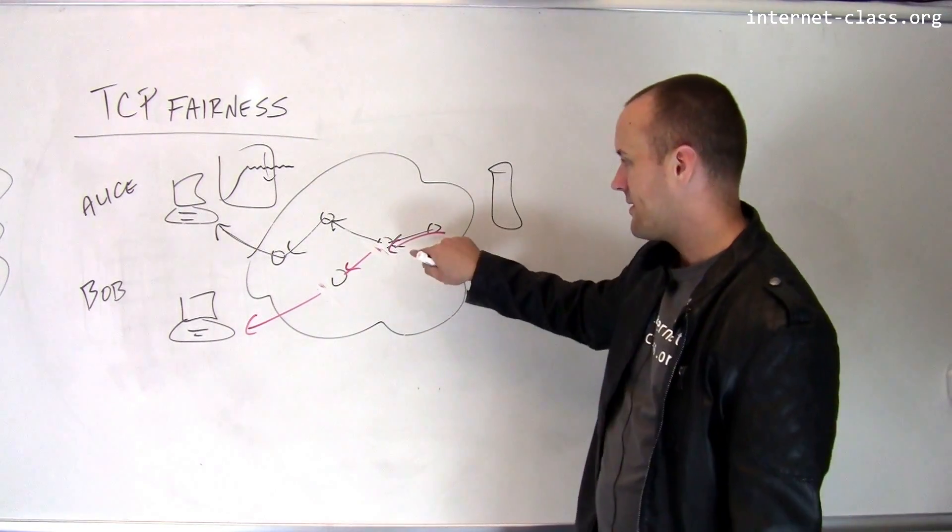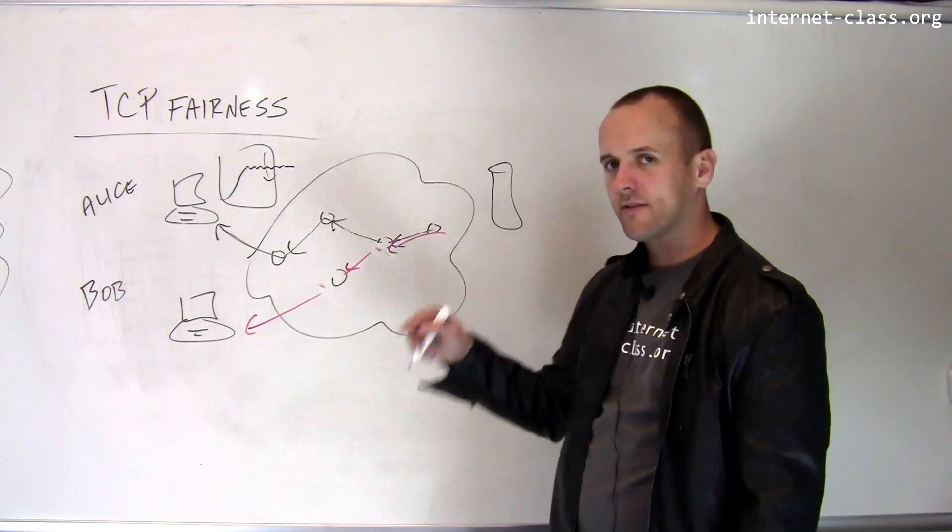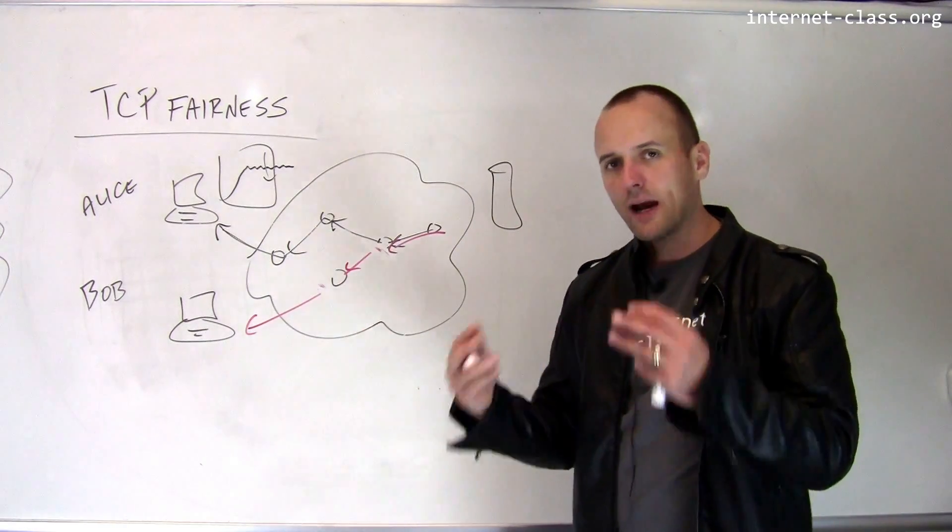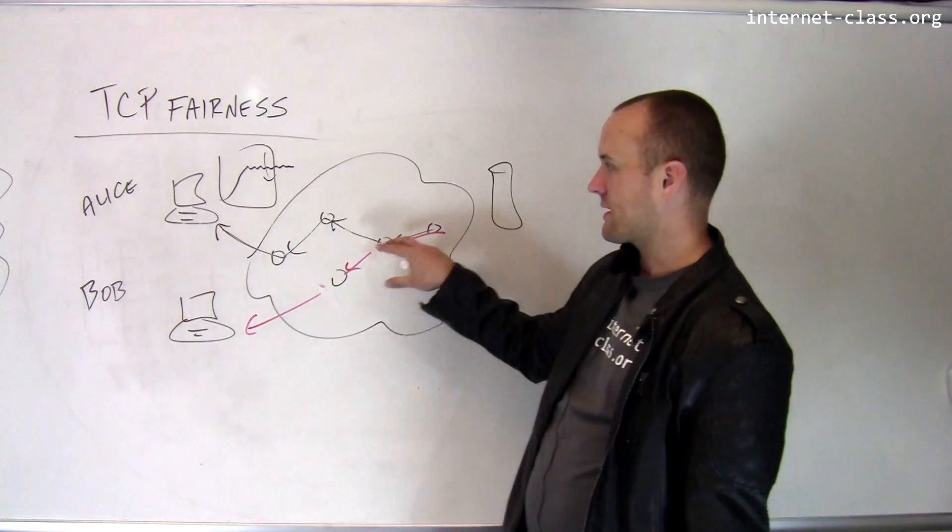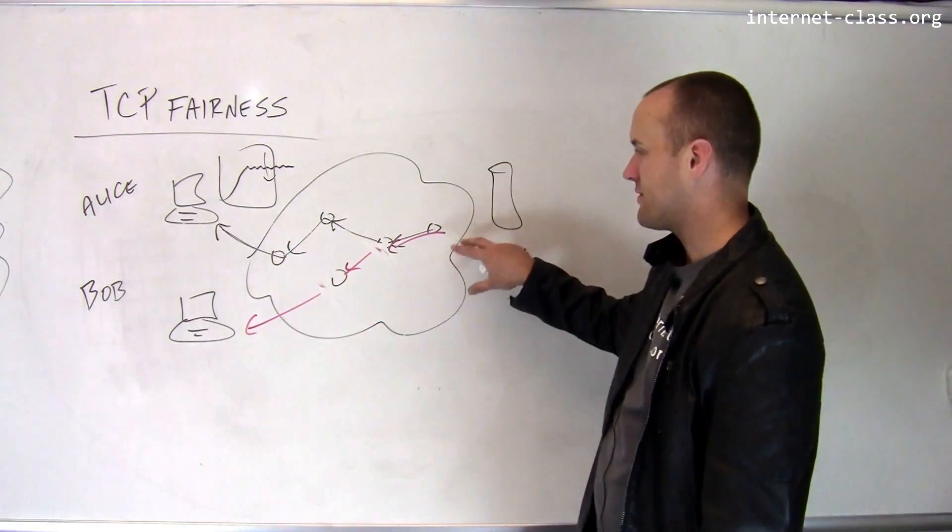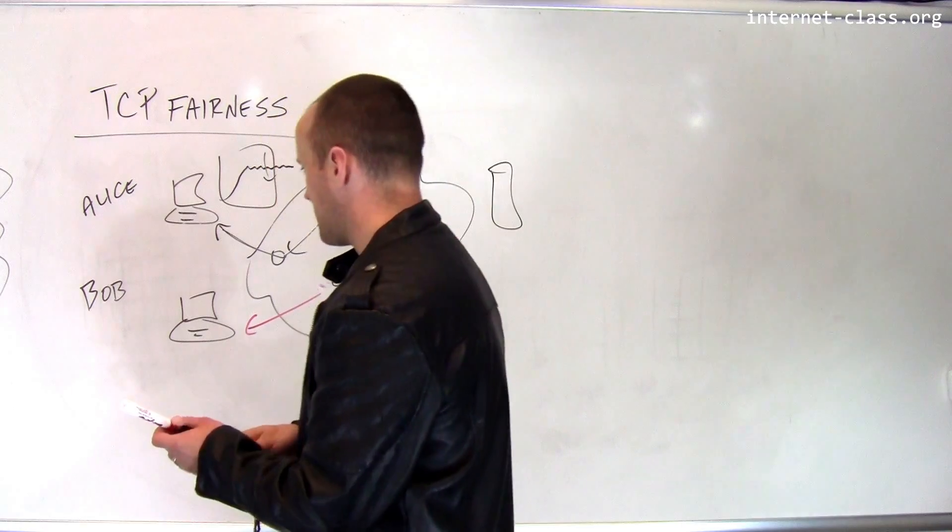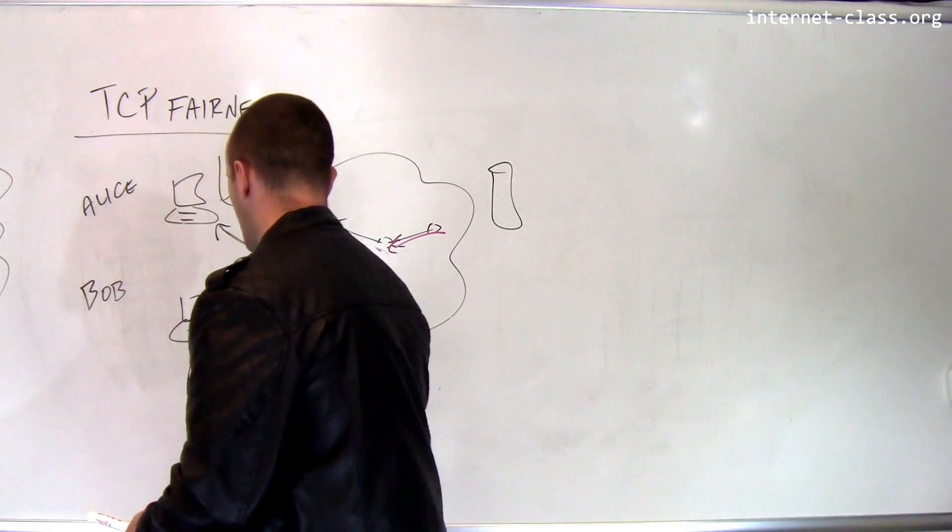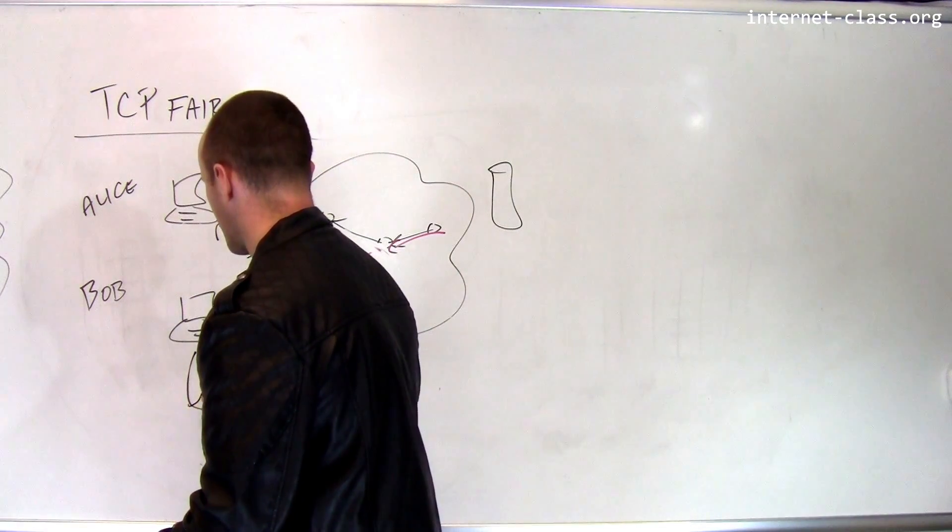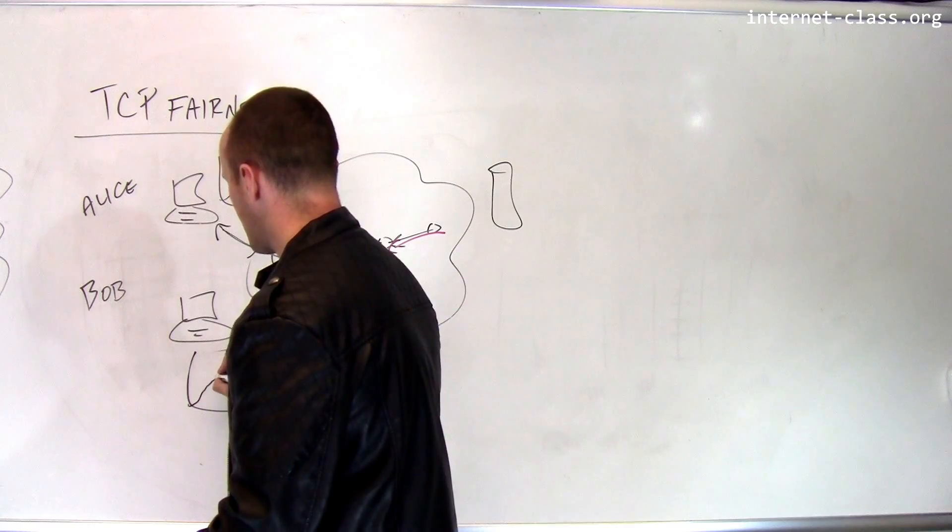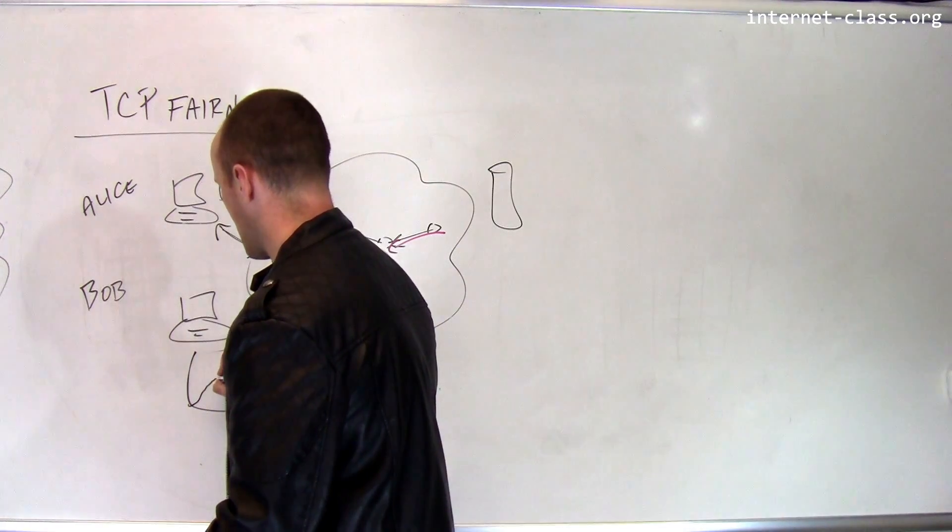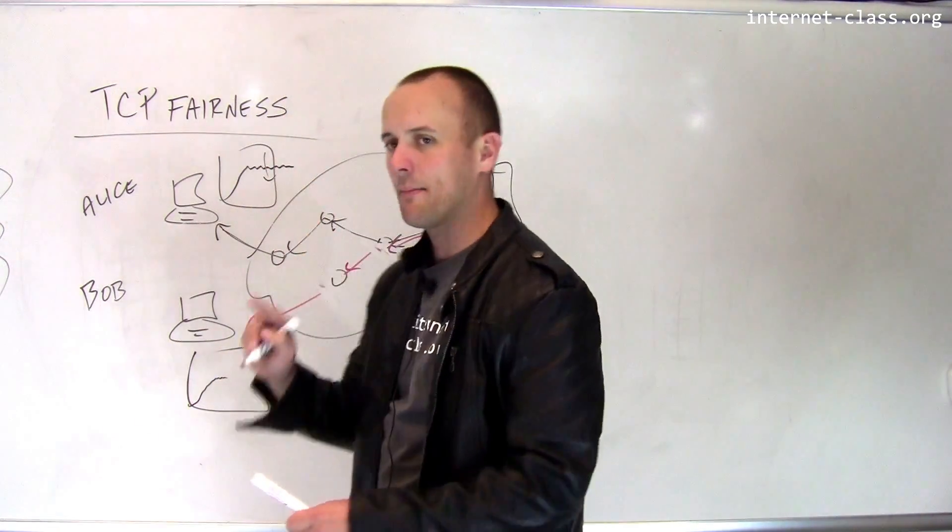And let's say that this link, these routers start to become overloaded. So these routers start to drop packets. The combined traffic from Alice and Bob is too fast. So what is Bob's TCP implementation going to do? Well, his is also going to start out slow and as soon as it starts to see packet loss, it's going to try to stop. But what's going to happen to Alice's connection?